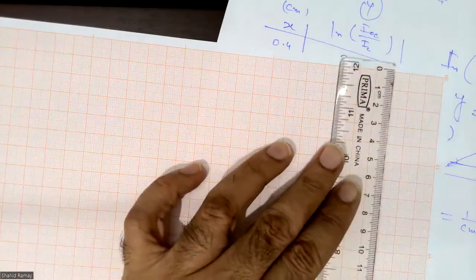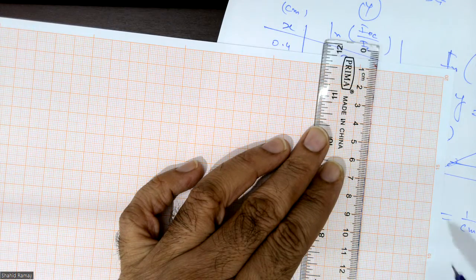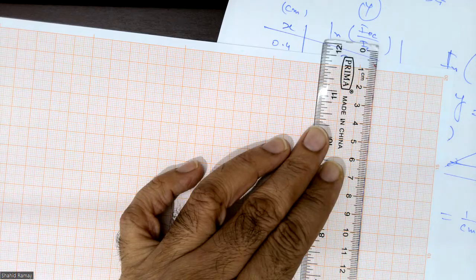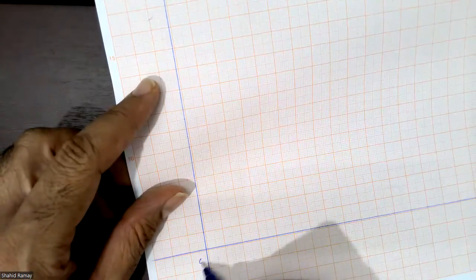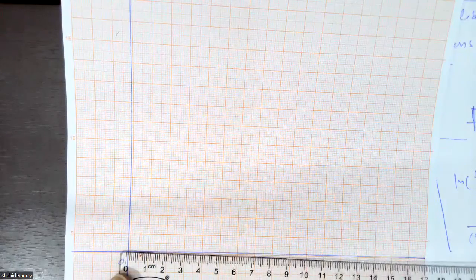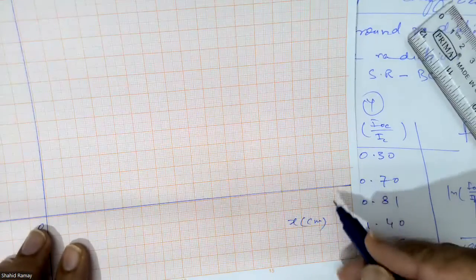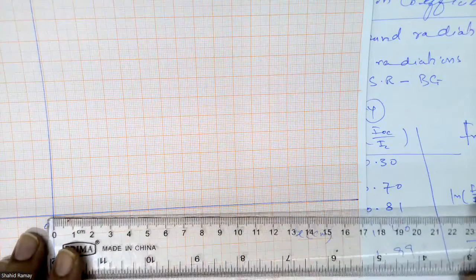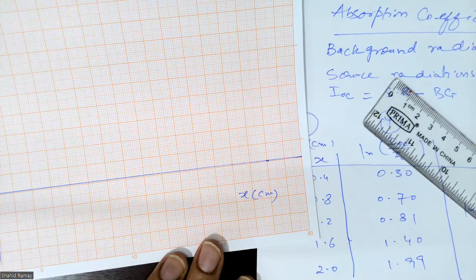Draw the line along the x-axis. This is our x-axis; mark it as x in centimeters. Now measure the number of squares — you can see the number of squares is 17, so it's better to take 15. So 2 divided by 15 gives the scale.